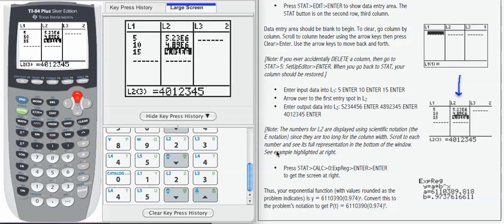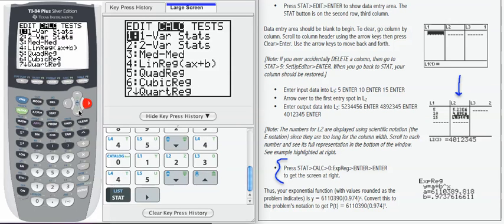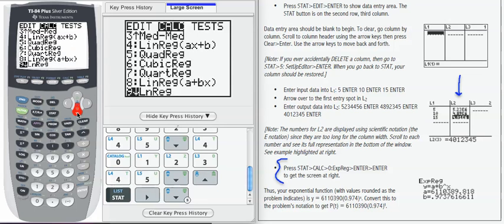Now that we have those data points in our calculator, we need to use them to write our model. We're going to follow the steps here under STAT and then I'm going to go one to the right, which is CALC. I'm looking for EXPREG, which is exponential regression. It's item number 10 at the very bottom.